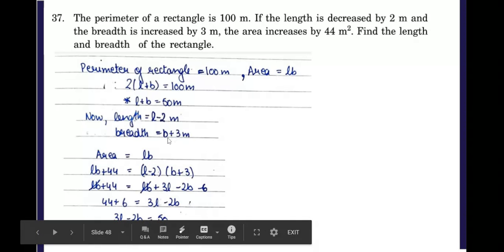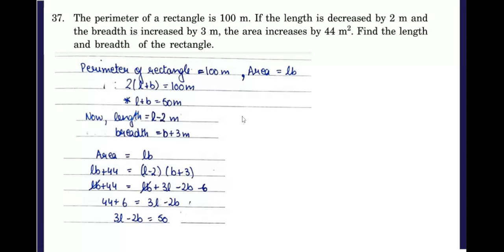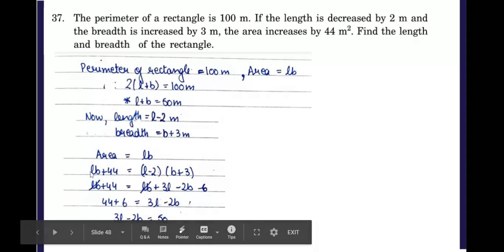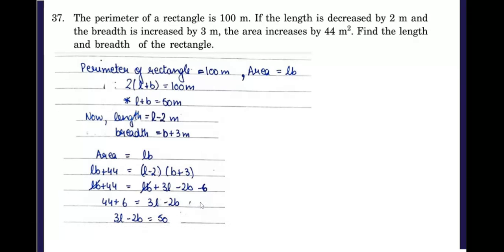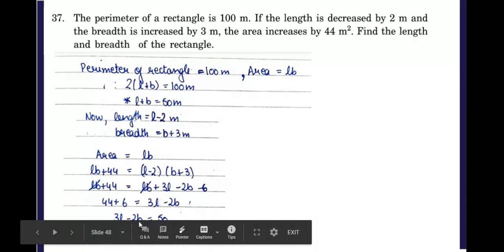L minus 2 into B plus 3, and we need to add 44 to the previous area so that it balances the equation. So L into B, the previous area, plus 44 has to be equal to L minus 2 into B plus 3. When we simplify this, we get another equation: 3L minus 2B equals 50.